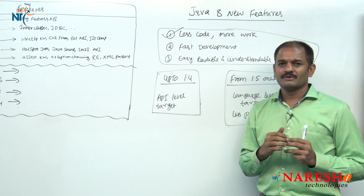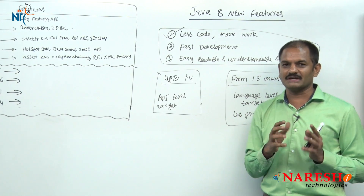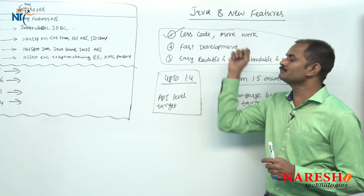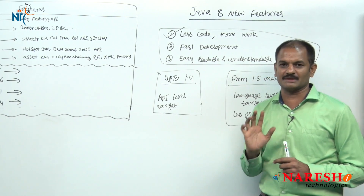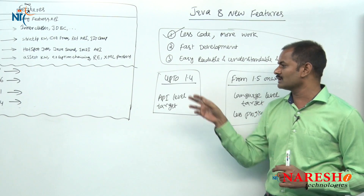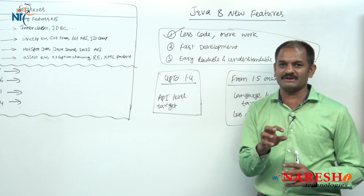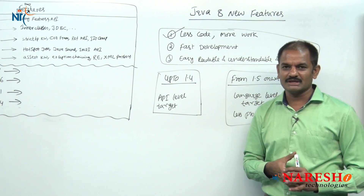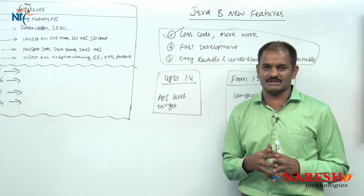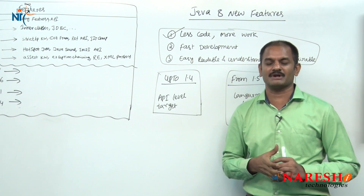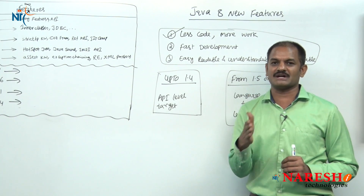The first point you have to understand: why new features are coming and what is the focus of Sun Microsystems up to 1.4 and after 1.4. The main reasons behind new features added in every version are: write less code, perform more work, fast development, and readable, understandable, maintainable. Up to 1.4 the focus is API level; from Java 5 onwards — 1.5 onwards — the focus is on language level. Java 5 onwards they made a lot of language-level changes keeping collection programming in mind, focusing on reducing lines of code.